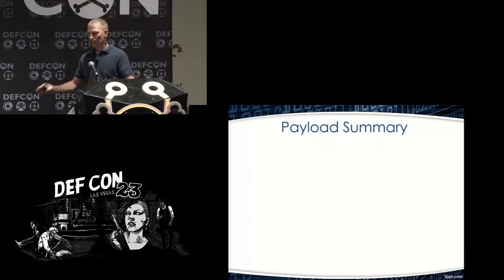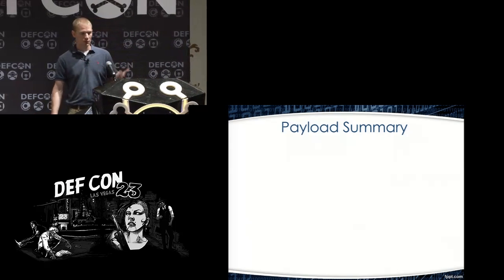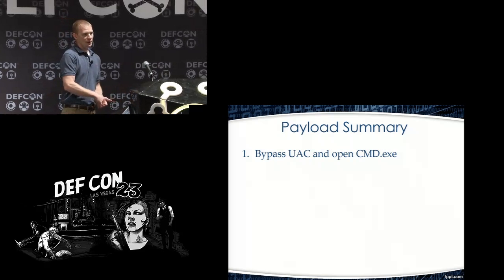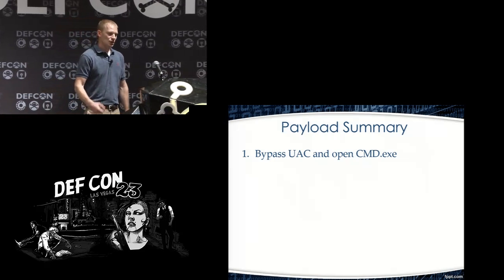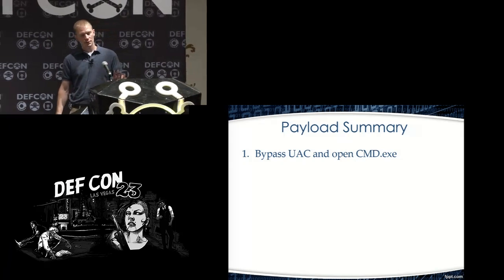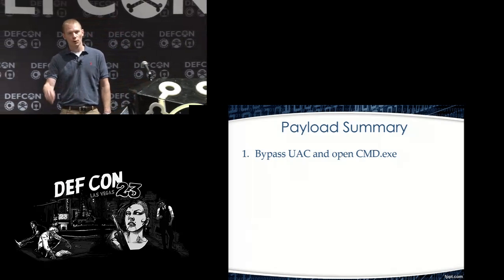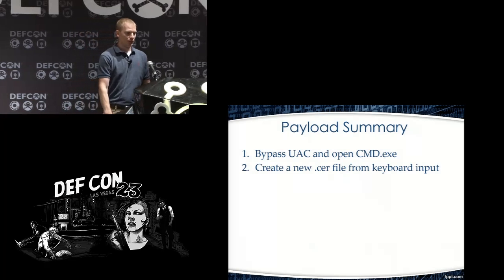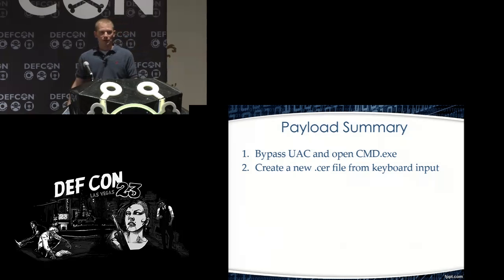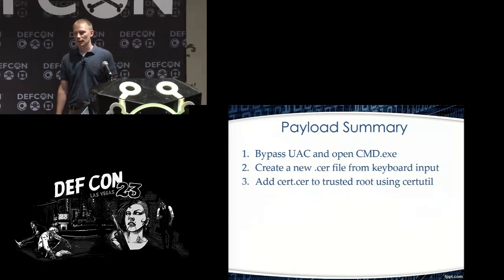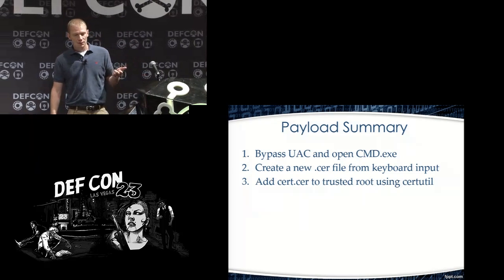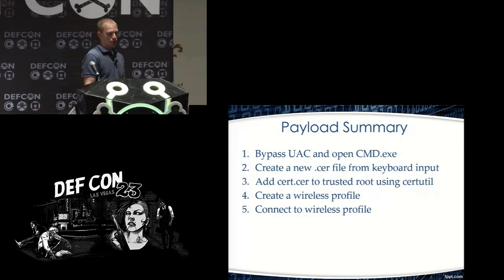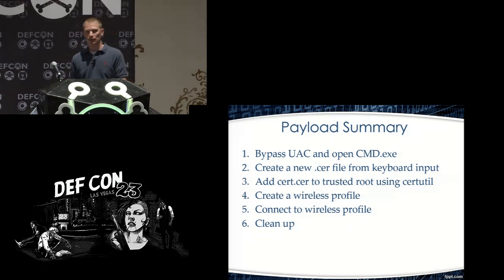Now let's talk about the payload itself that's sent to the victim. First, it bypasses Windows UAC and opens a command prompt — if the user has admin credentials, it gets admin; if not, just user credentials. This works with user credentials too, just with a few extra pop-up boxes. Second, it creates a .cert file from keyboard input. Third, it adds that certificate to the trusted root store using the built-in certutil tool. Then it creates a new wireless profile, connects to it, and cleans up by deleting the files it created.